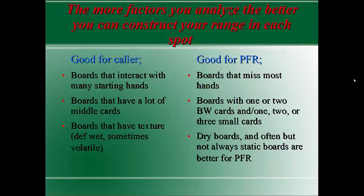Boards with a lot of middling cards tend to be better for the caller. Even if the button opener can have all those same suited connectors the big blind can have, he'll have a lower concentration of them because his range includes hands like ace-king, ace-queen offsuit, and light opens. The preflop caller won't have those hands, so he'll have a higher concentration of suited, connected, and middling cards. When boards come out with lots of middle cards, the preflop caller hits that board with a higher concentration of hands within his range.